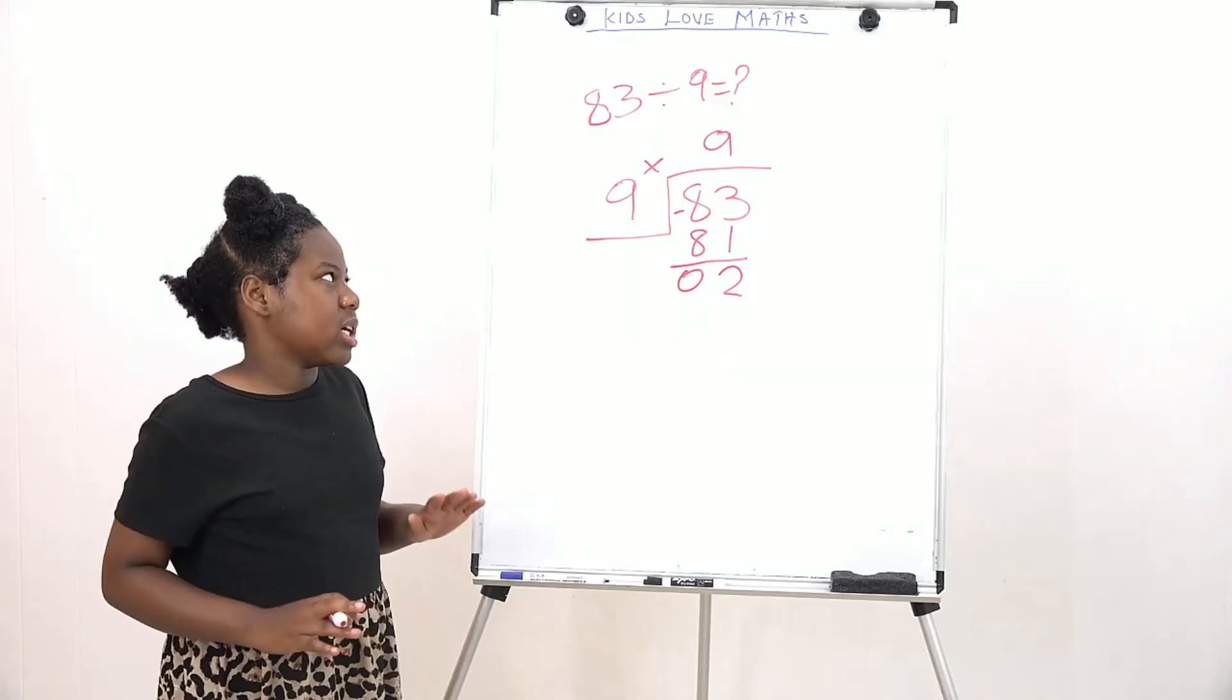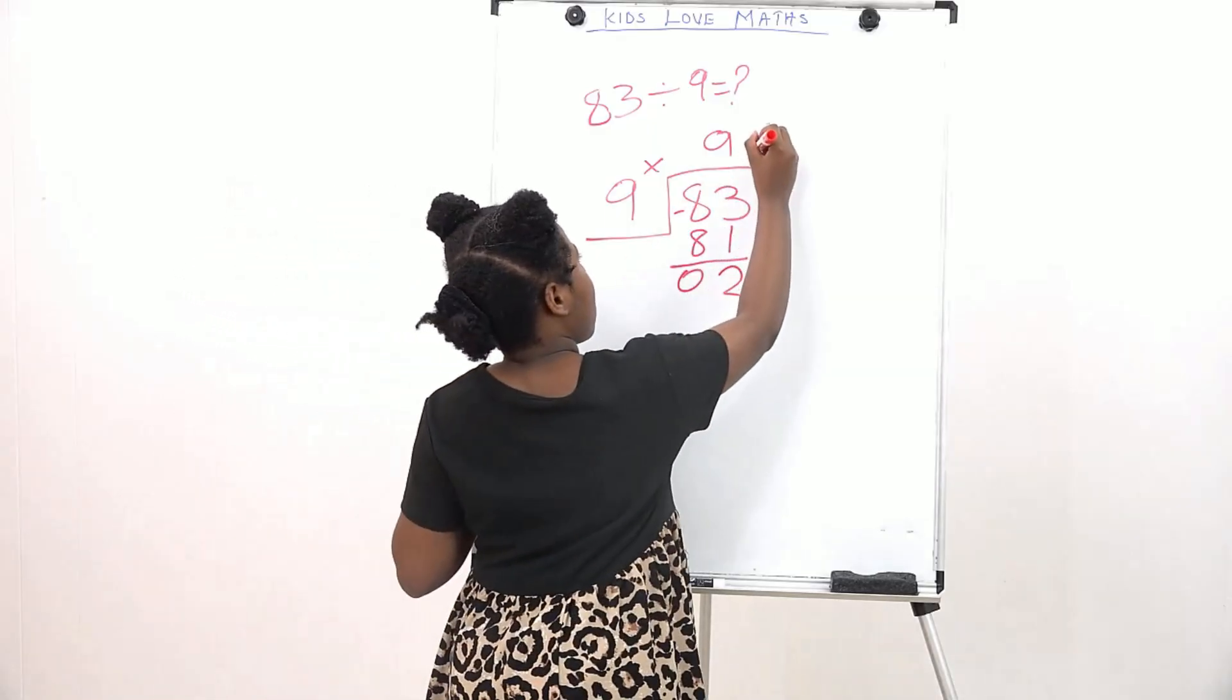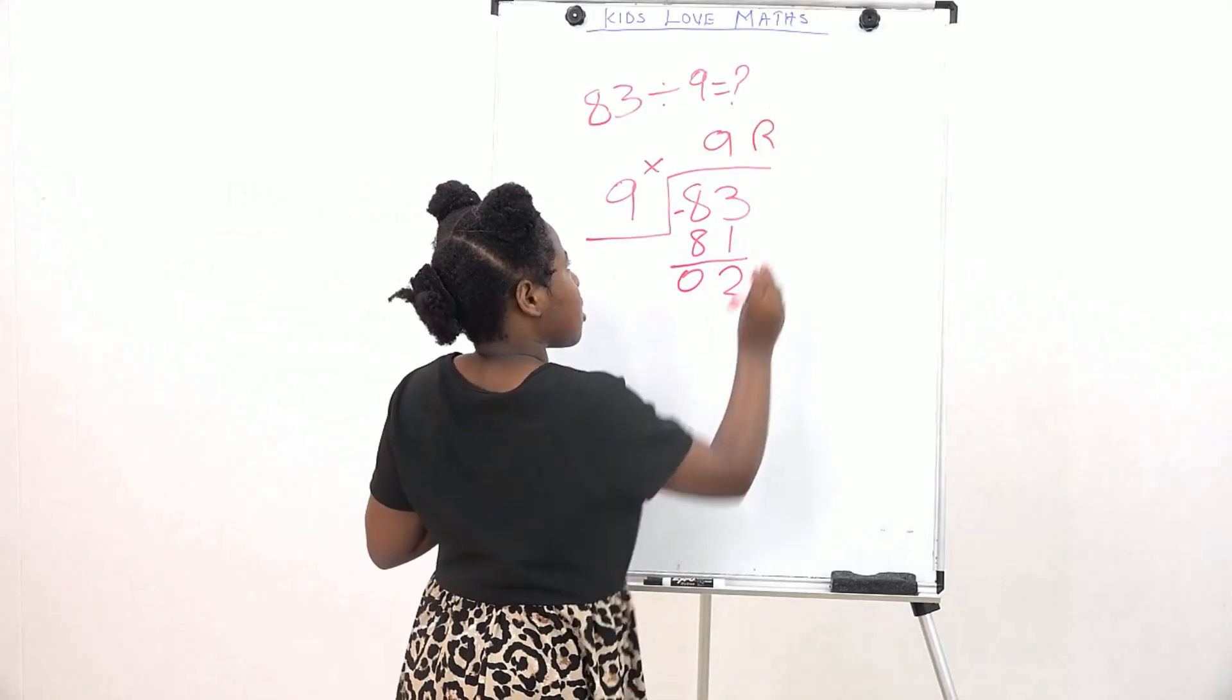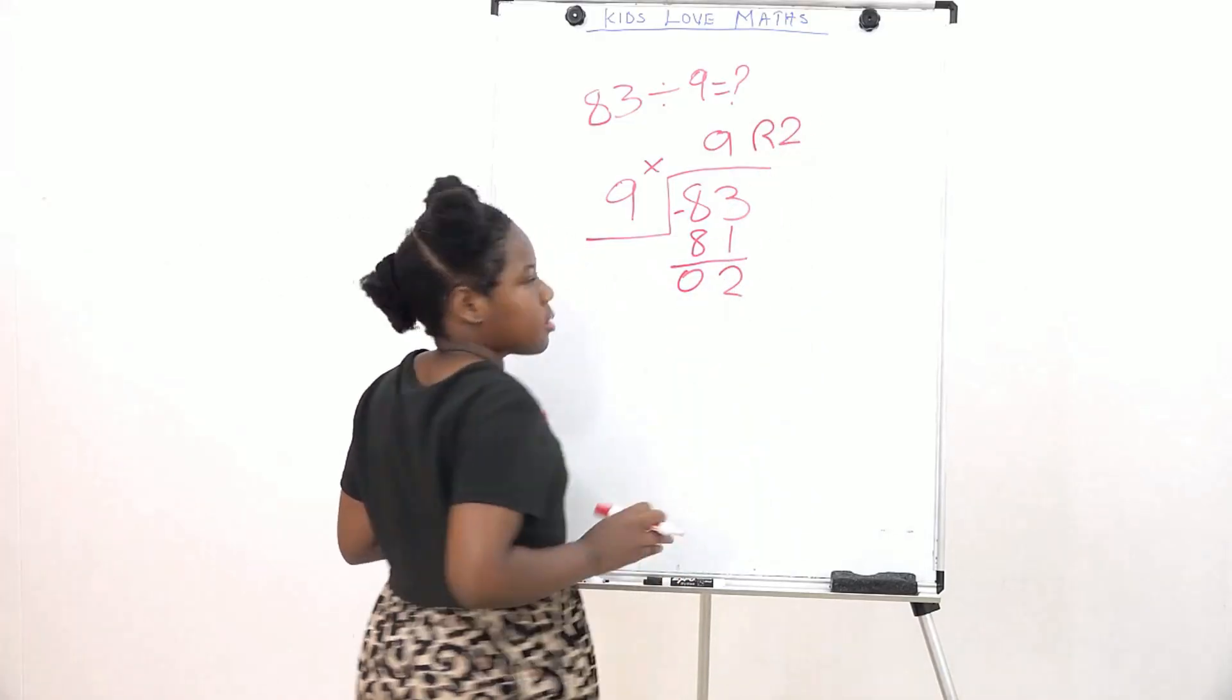So that means our answer is 9. Put the R for short for remainder, then put the 2 right next to it, like this.